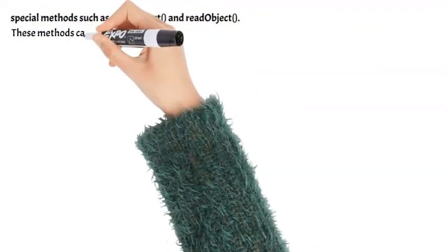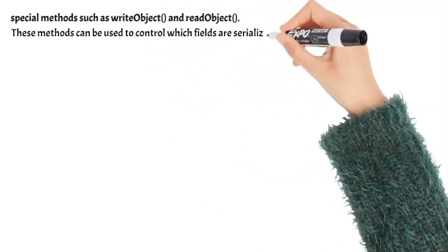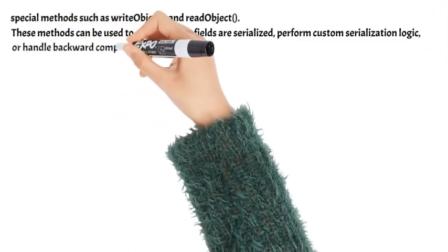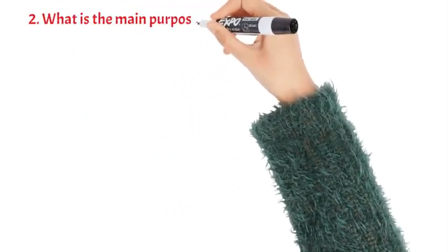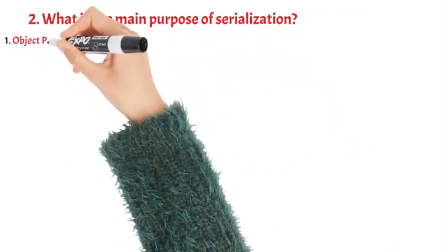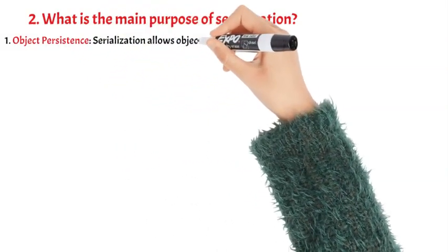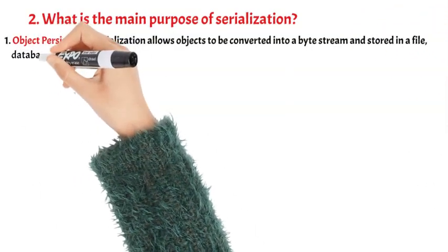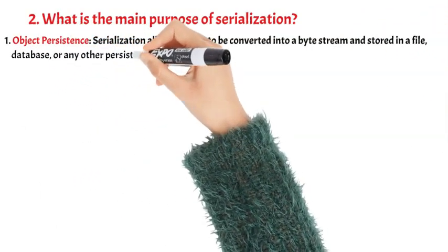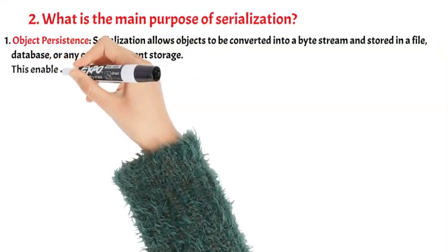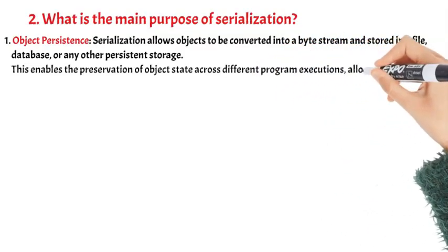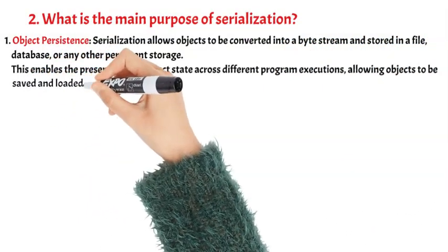Serialization also allows for customizing the serialization and deserialization process by implementing special methods such as writeObject and readObject. These methods can be used to control which fields are serialized, perform custom serialization logic, or handle backward compatibility issues. Serialization allows objects to be converted into a byte stream and stored in a file, database, or any other persistent storage, enabling the preservation of object state across different program executions.